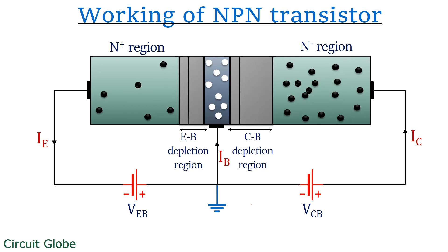The overall emitter current is the result of base current and collector current. A noteworthy point is that very few electrons get combined with the holes in the P region; therefore, the base current will be very small. Thus, the emitter current will be approximately equal to the collector current. We know that the direction of flow of current is opposite to the direction of flow of electrons, and here electrons are moving from emitter region to collector region. Therefore, the direction of flow of current in case of NPN transistors will be from collector region to emitter region.